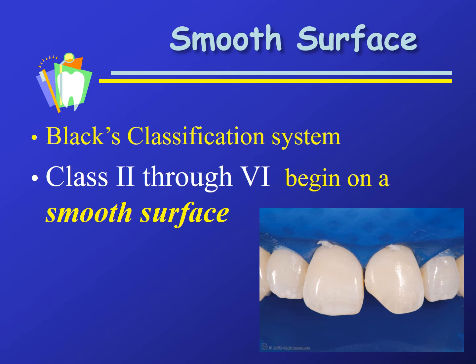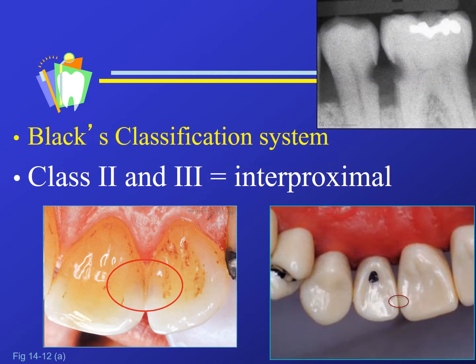If class one is in the pits and fissures, then classes two through six will begin on a smooth surface — the caries begins on a smooth surface. With teeth, you either have a pit and fissure area or a smooth surface. If it's pit and fissure, it's class one. That leaves classes two through six to all be smooth surface.